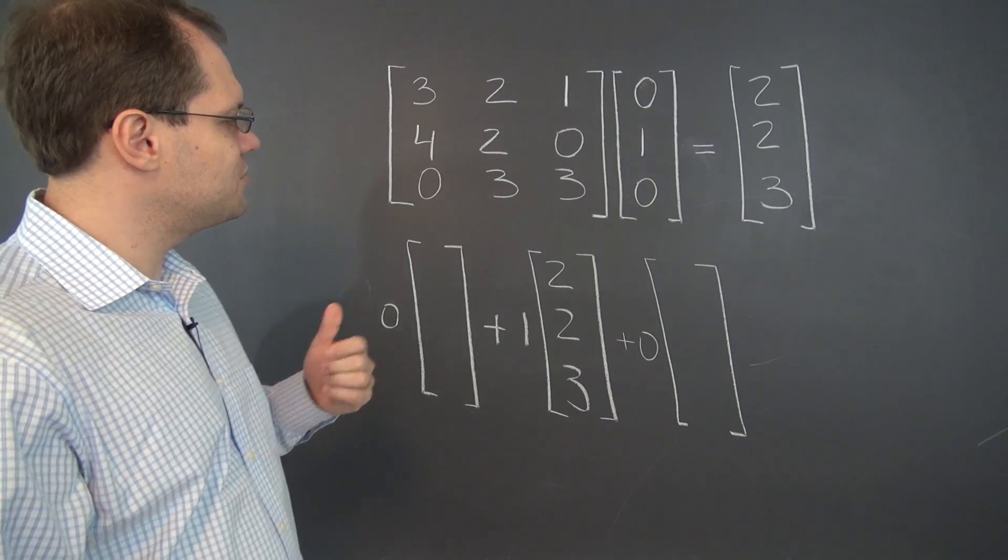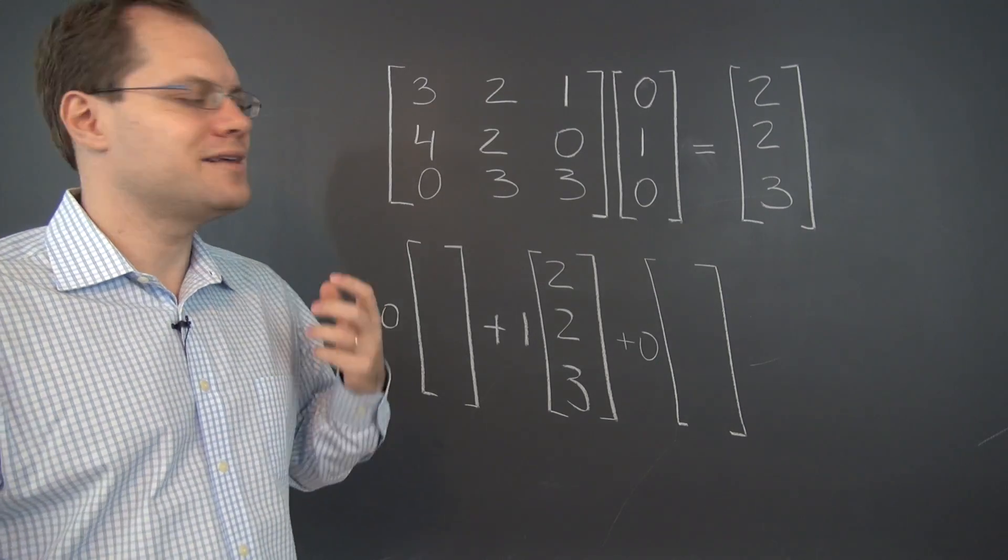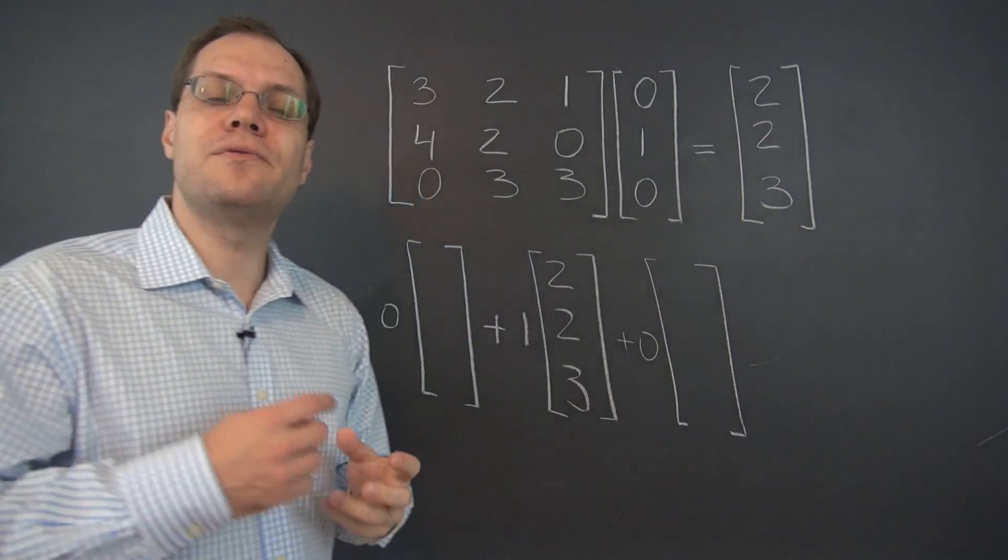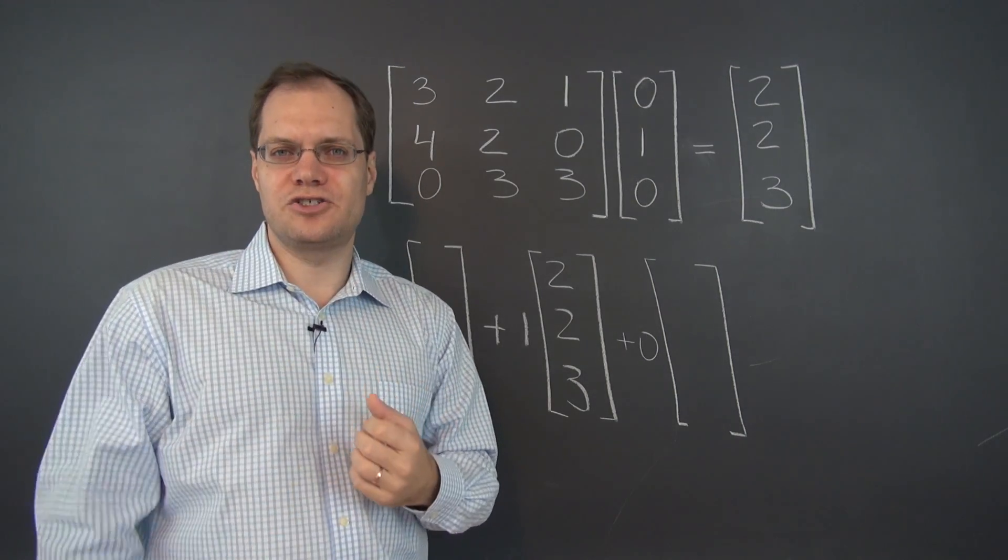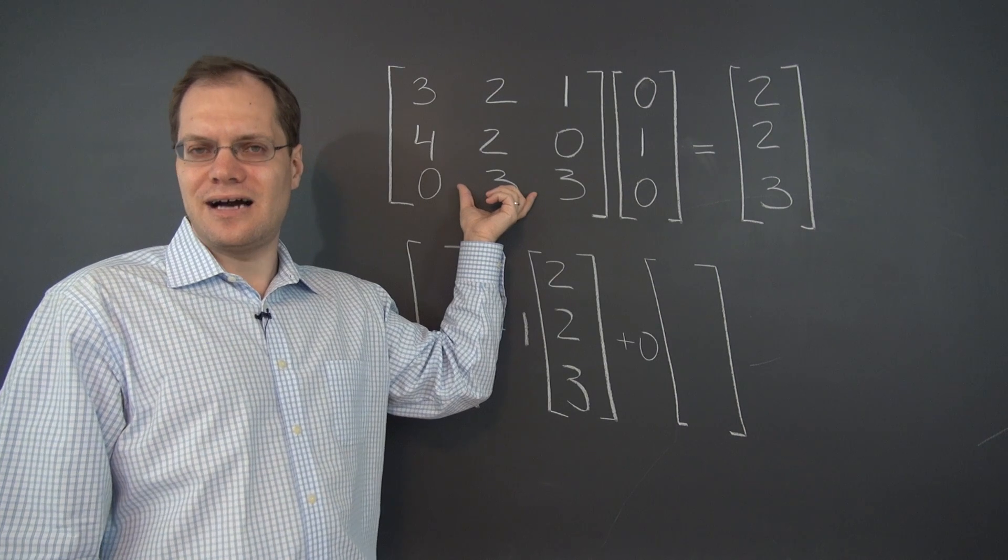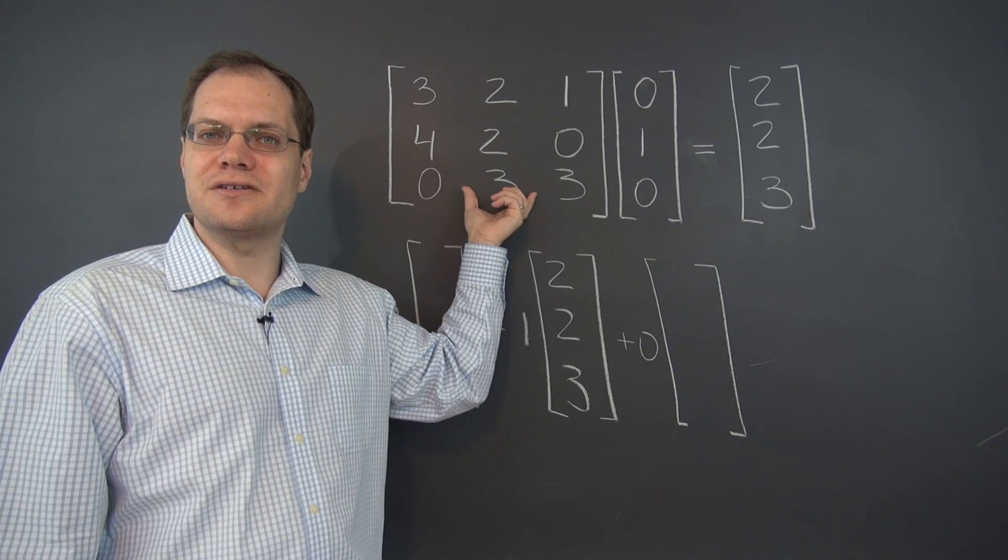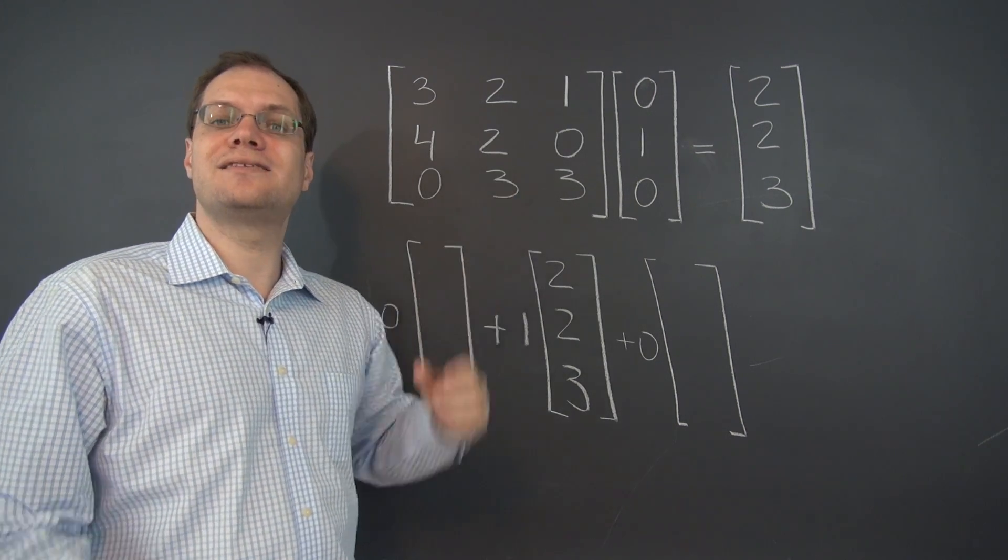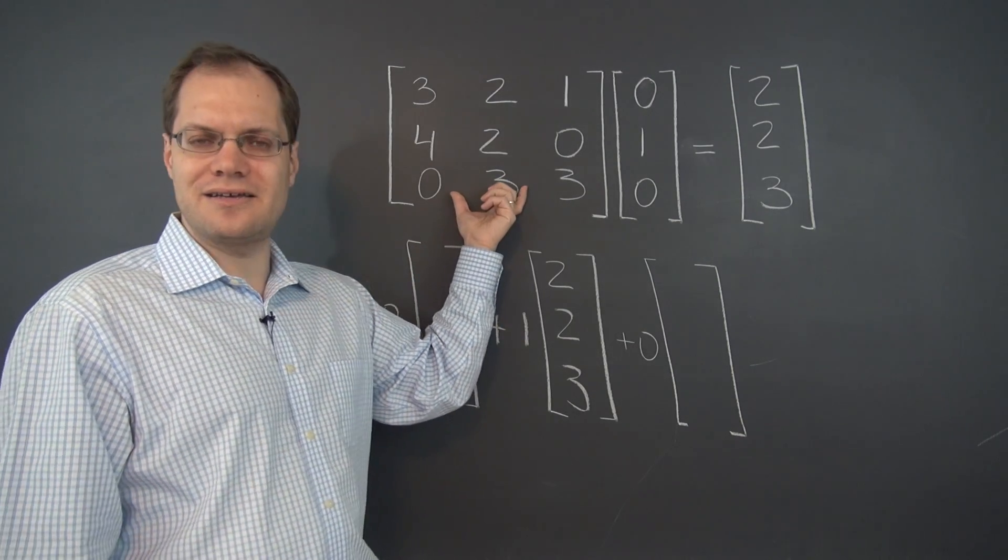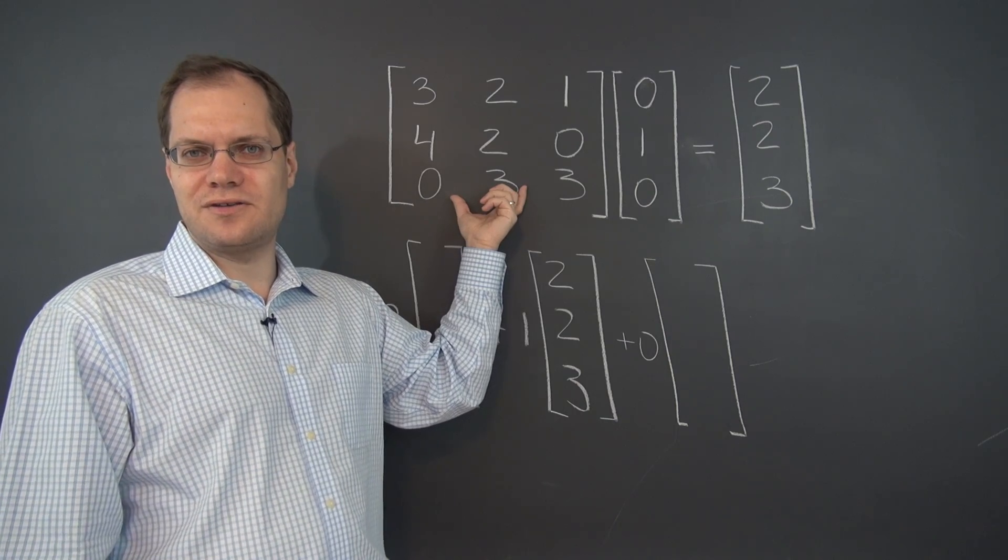So let's take a step back and ask ourselves, well what's really the answer structurally? Yes, we can say the answer is two, two, three. But if we try to see what's going on in larger blocks, we can say that the answer is simply the second column of this matrix. So that's slightly more of a bird's eye view answer. The answer is the second column of the matrix on the left.